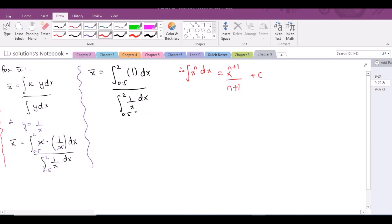For the denominator, we know that the derivative of the denominator exists in the numerator. So for such cases, we can use the ln, ln of the denominator plus c. So x bar equals x with limits from 2 to 0.5 divided by ln x from 2 to 0.5.